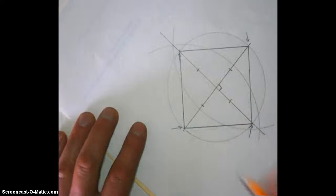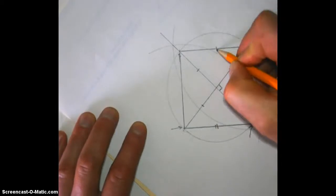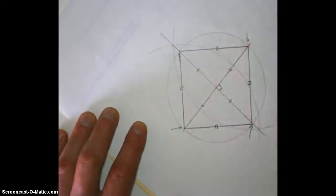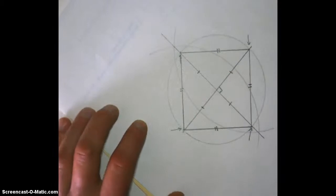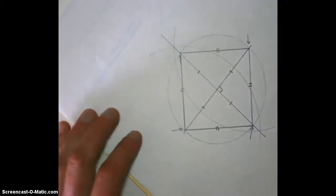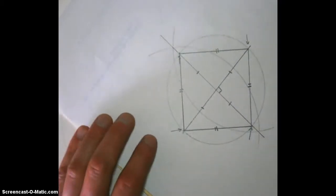And we also know the outside segments are all congruent to each other because it's a rhombus. A rhombus and a square both have that characteristic.